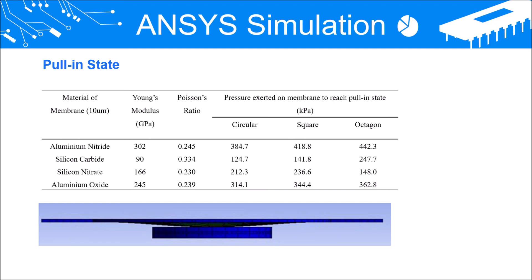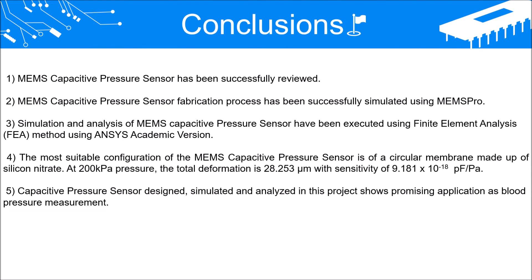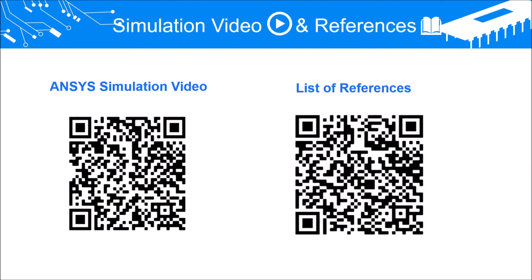In conclusion, MEMS Capacitive Pressure Sensor is successfully reviewed. Fabrication process has been successfully simulated using MEMS-PRO. Simulation and analysis using FEA in ANSYS is executed. The most suitable design configuration is circular membrane made up of silicon nitride. And finally, the MEMS Capacitive Pressure Sensor shows promising application for blood pressure measurement. This QR code here is the ANSYS simulations video and list of references of this project respectively.